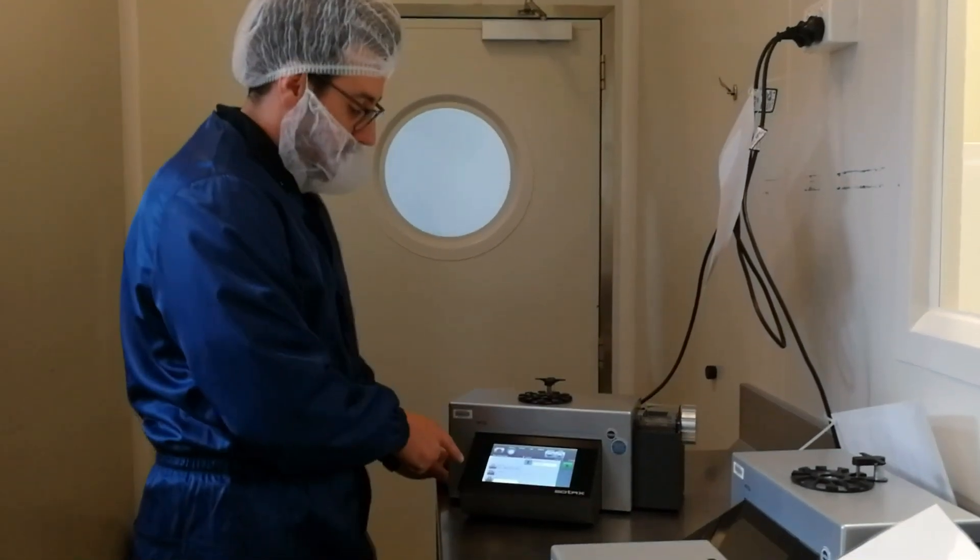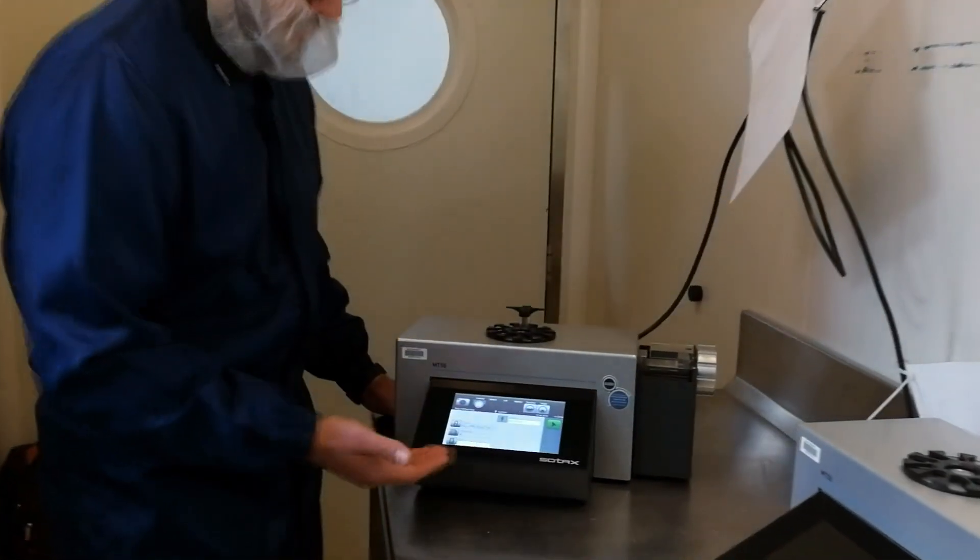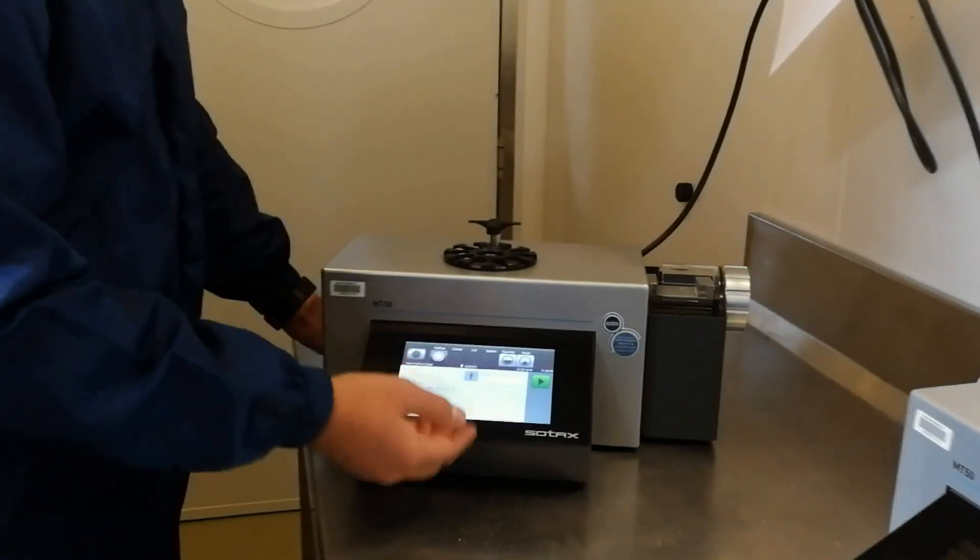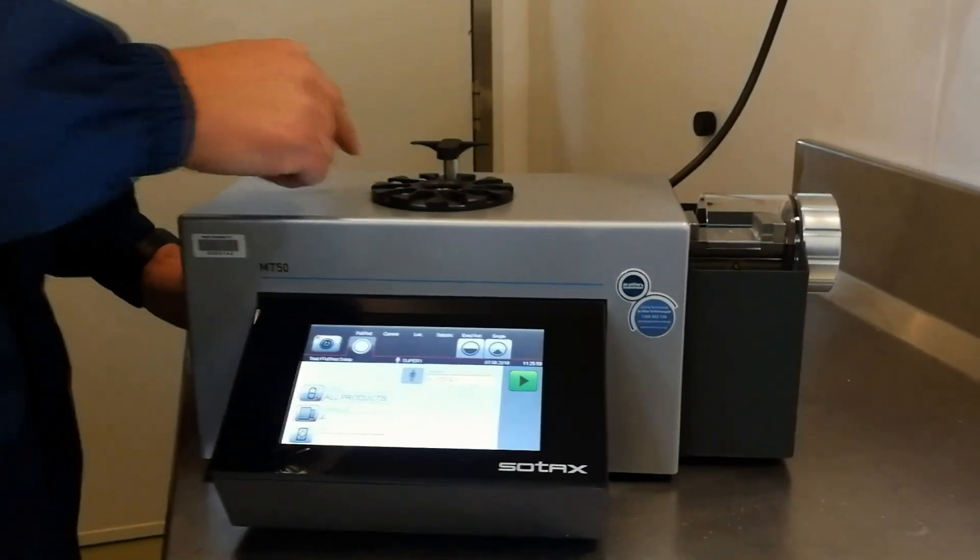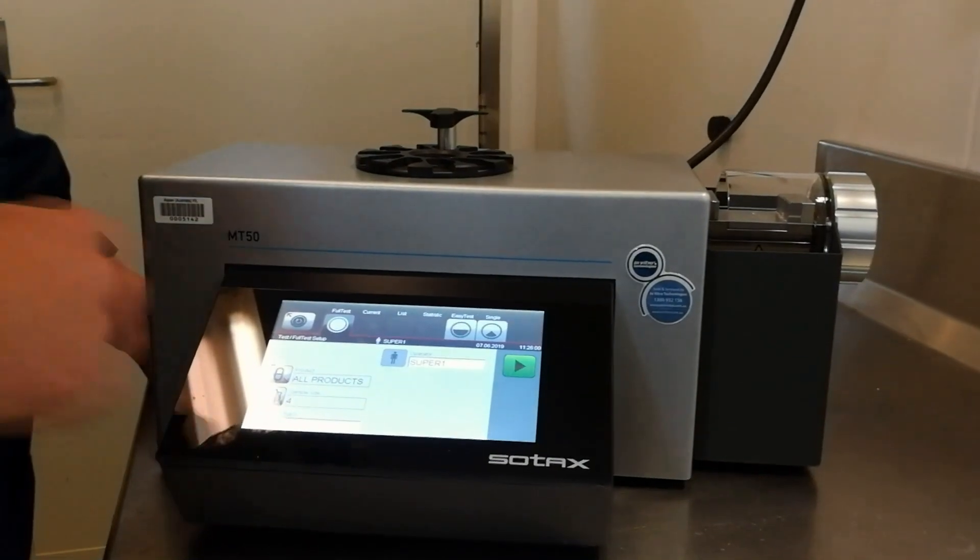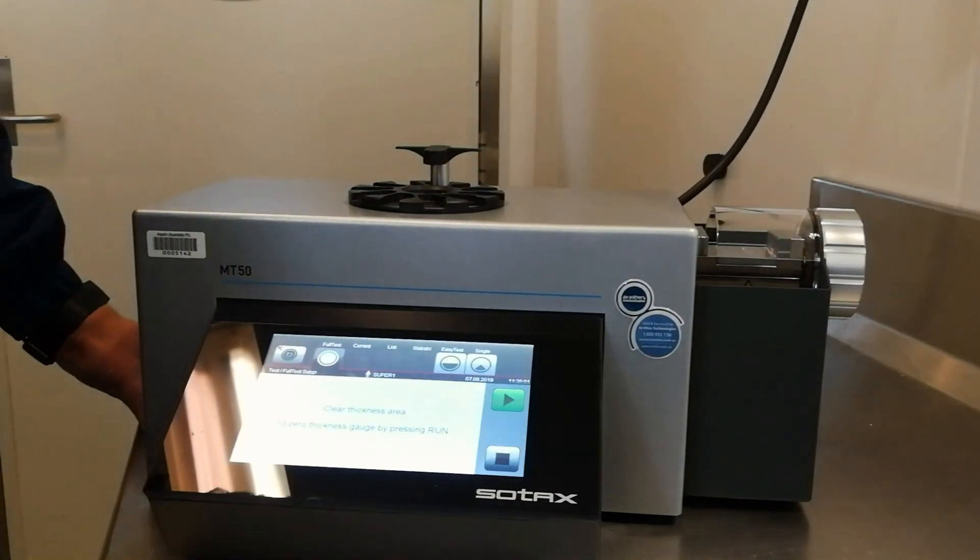In the background we've preset the products. In this case we've selected all products as the preset character. We've got four samples we're going to run. I've already put the four samples into the auto sampler, so we're ready to go with the first test.